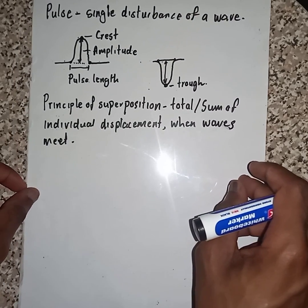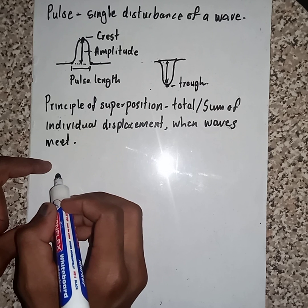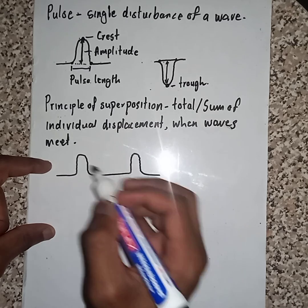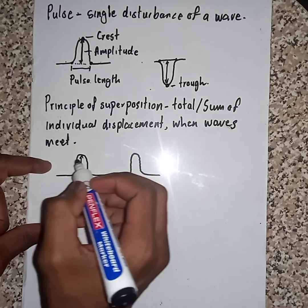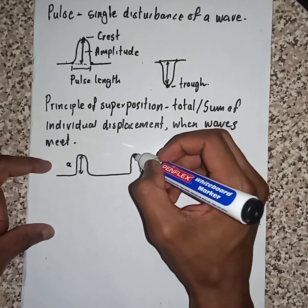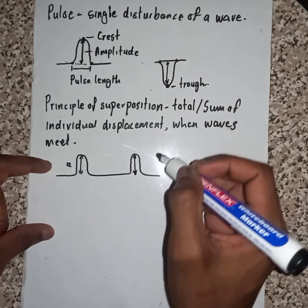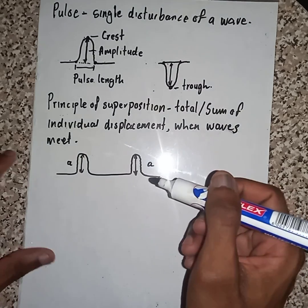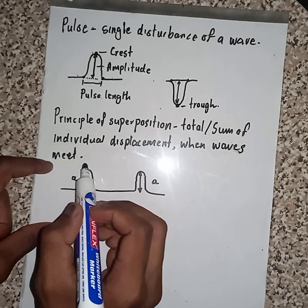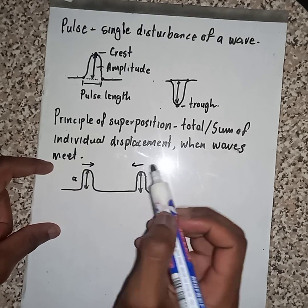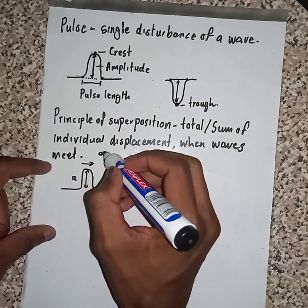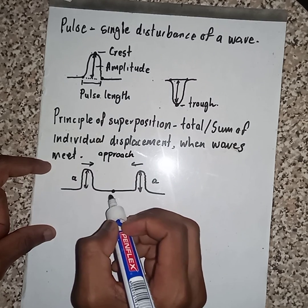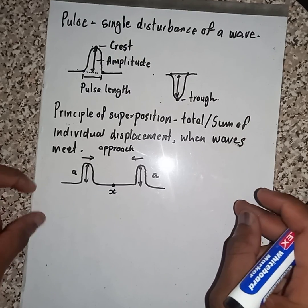Let me explain this concept using a diagram. Suppose we have a diagram where we have an amplitude — let us call it A. Suppose these two amplitudes are identical, and they approach each other up until they reach this point, which is X.